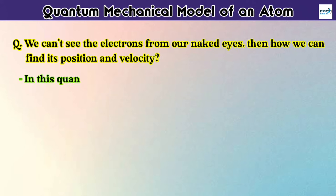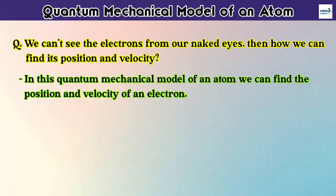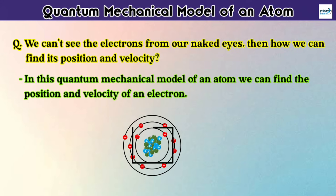Yes, in this quantum mechanical model of an atom, we can find the velocity and position of an electron. So to find the position, take a region around the nucleus instead of an orbit, where the electron probability is maximum. And for this only, the Schrödinger proposed the orbital concept.